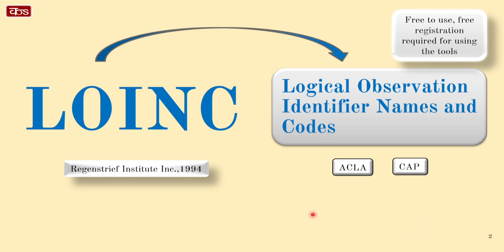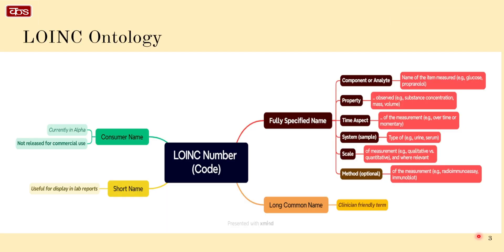Why is LOINC so important? Well, it plays a crucial role in facilitating data exchange and interoperability between different healthcare systems. This means that regardless of where a patient's test was done, their data can be accurately understood and utilized anywhere. This leads to improved accuracy in health records and better patient outcomes.